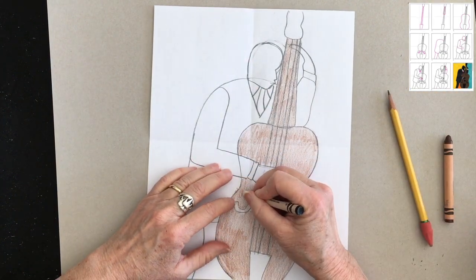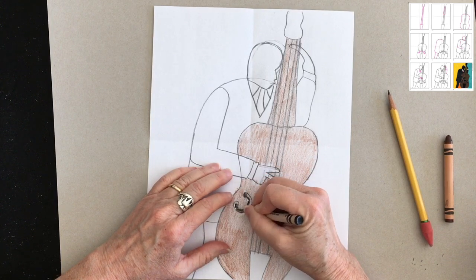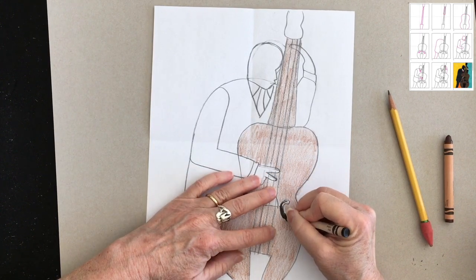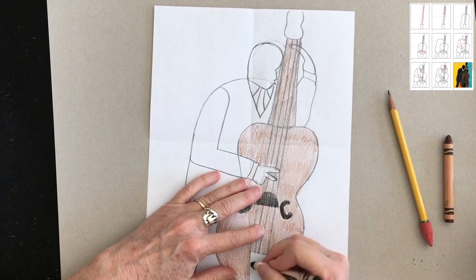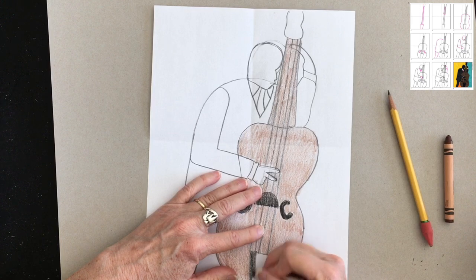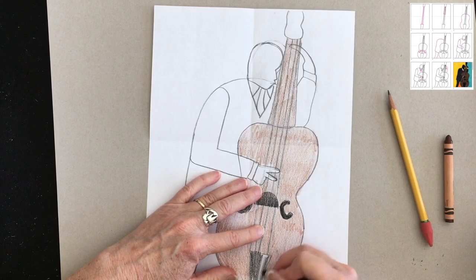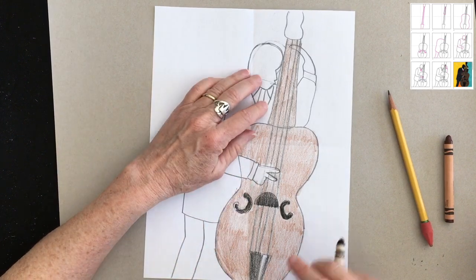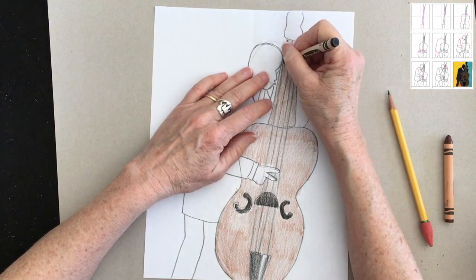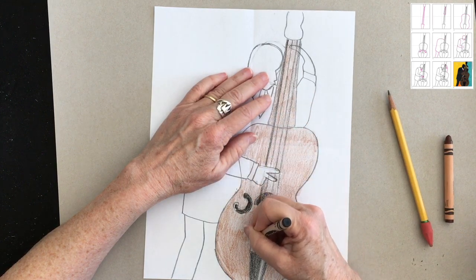Or maybe your bass is going to be blue. With my black crayon, I'll fill in the openings in the body of the bass. And because we've been talking about value in some of my classes, I'm going to put a little bit of a highlight on that piece on the bottom. See that little white stripe I'm leaving? Kind of shows where light would hit it.